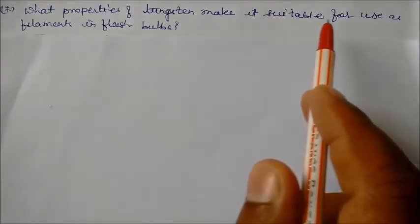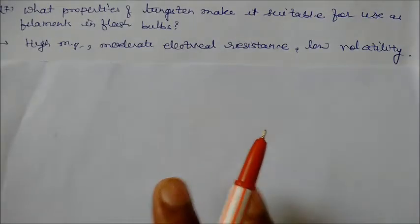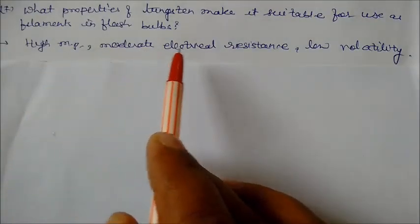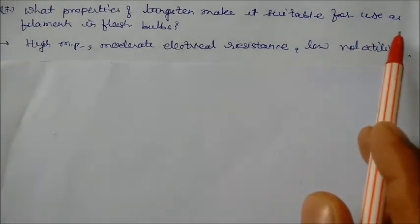What property of tungsten make it suitable for use as elements in flash bulbs? Actually tungsten has a high melting point, moderate electrical resistance and low volatility. So that's why it is very suitable for filaments in flash bulbs.